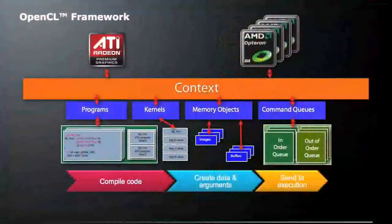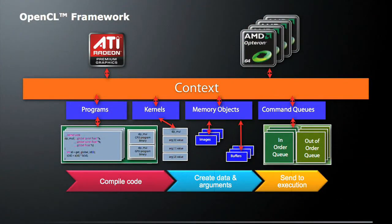Let's assume we have a context with two devices in it — on the left, an ATI GPU, and on the right, AMD multi-core CPUs. How would we actually submit work to these devices? There are three basic steps that you're always going to use. The first is you're going to compile code. After you've compiled that code, you're going to create data and set your arguments. After you've done those three easy steps, you'll have executed an OpenCL program.